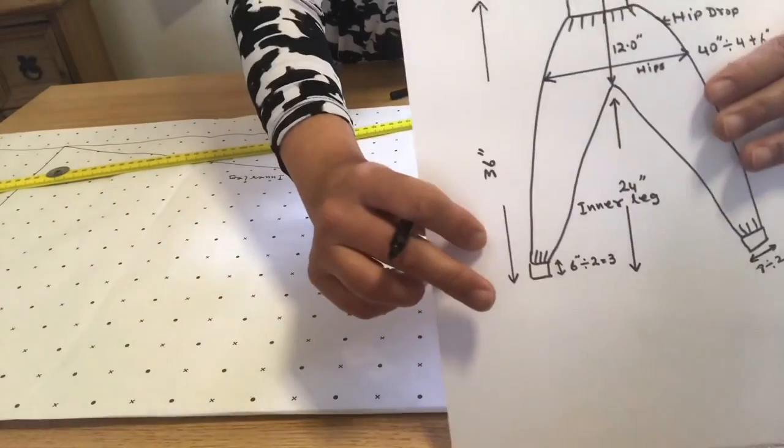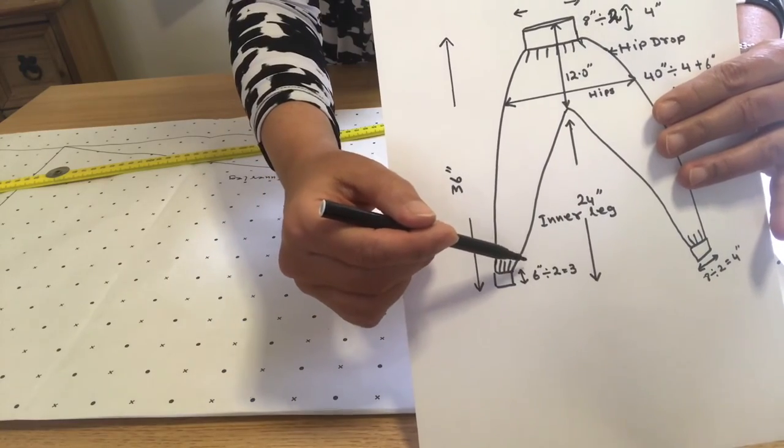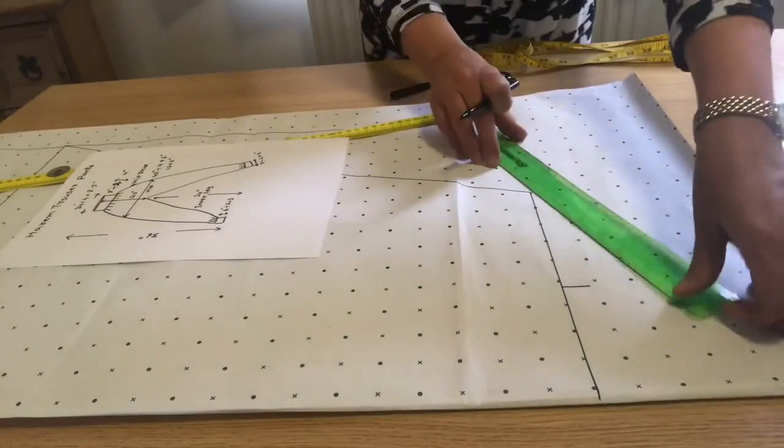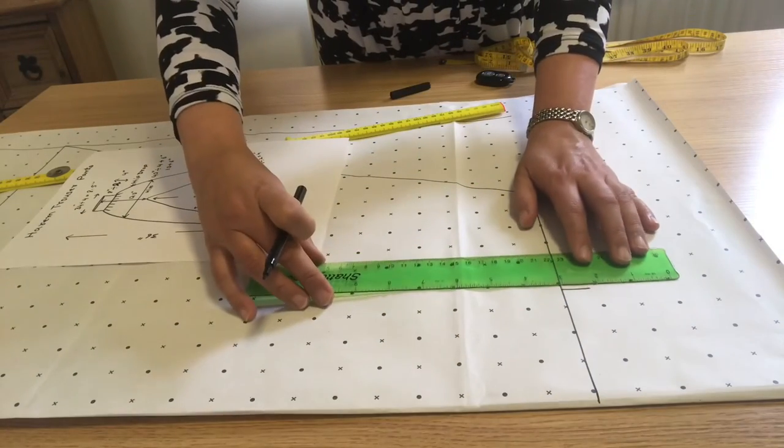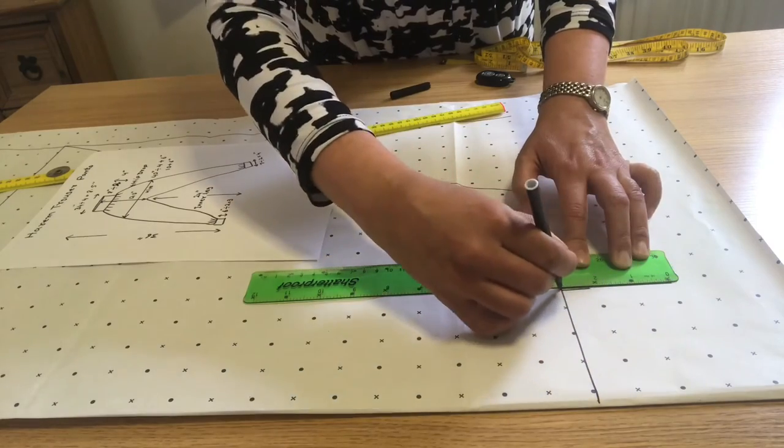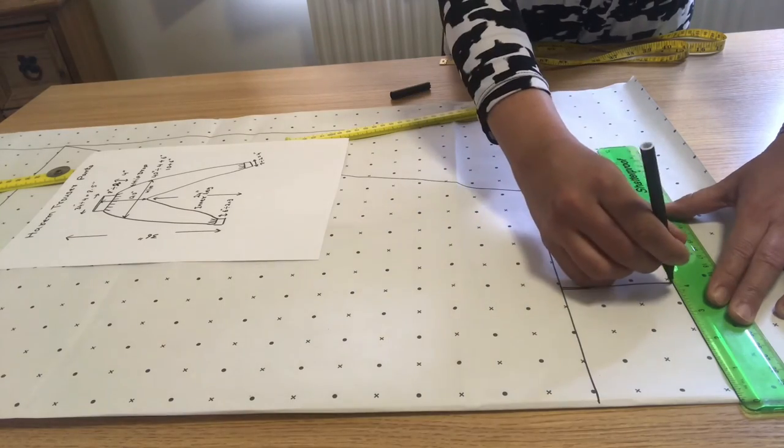And width, as I mentioned here, is 6 inches. The fabric fold into twice makes 3 inches. So 3 inches I will go down, and then join these marks together.